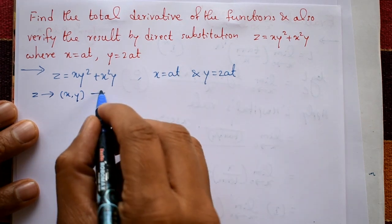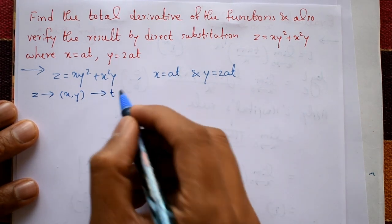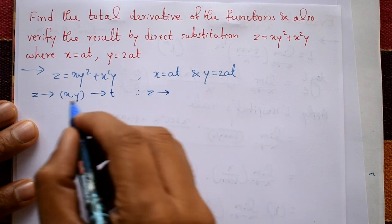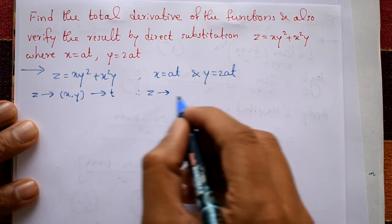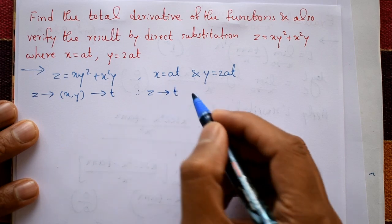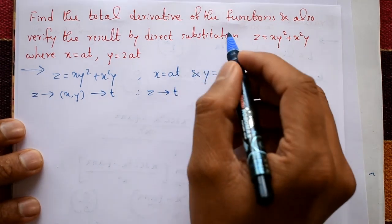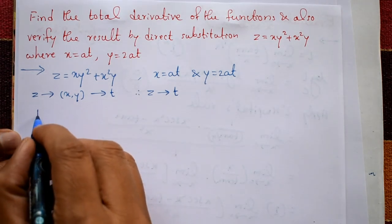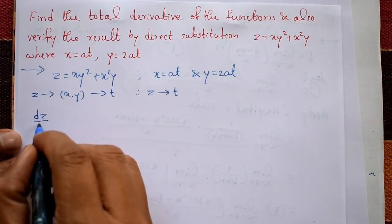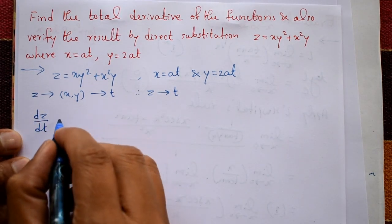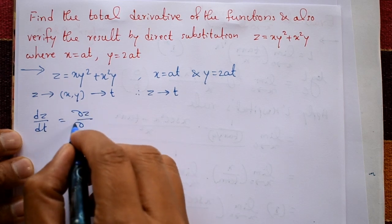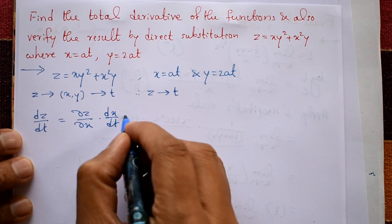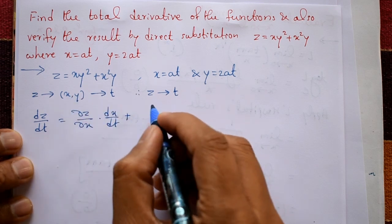Since x and y are functions of the single independent variable t, z is a composite function of the single independent variable t. So we need to use the total derivative formula: dz/dt = (∂z/∂x)(dx/dt) + (∂z/∂y)(dy/dt).